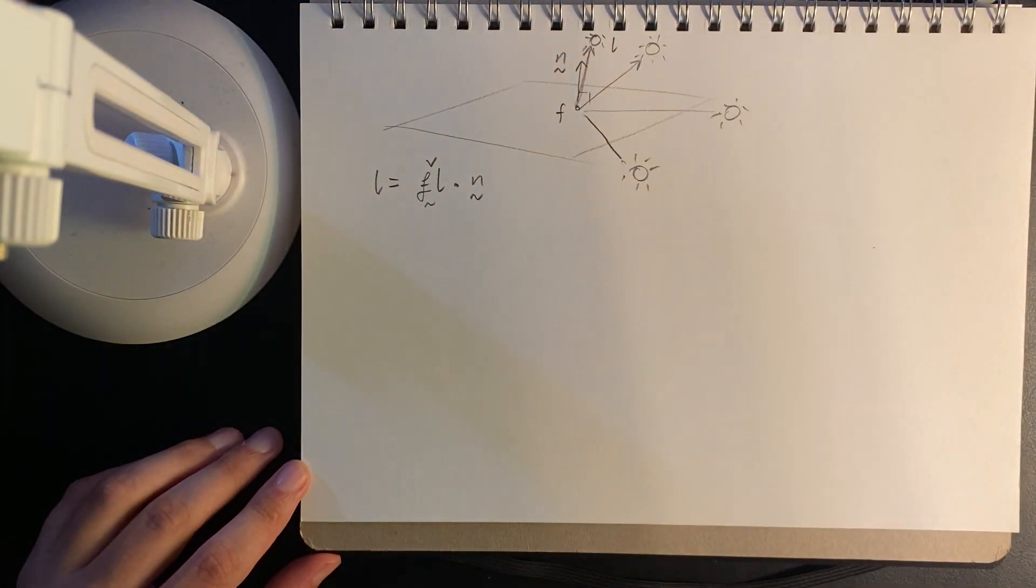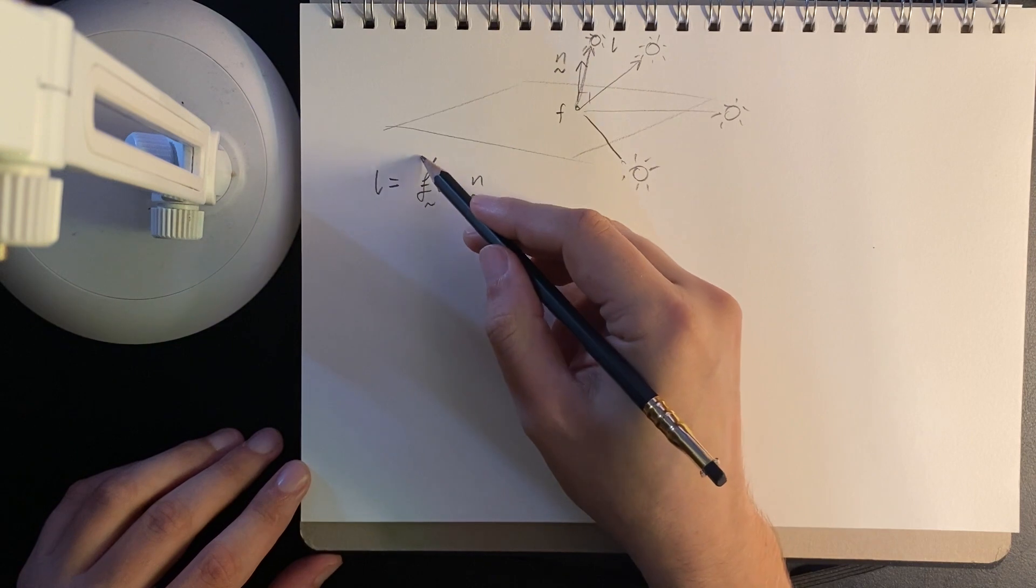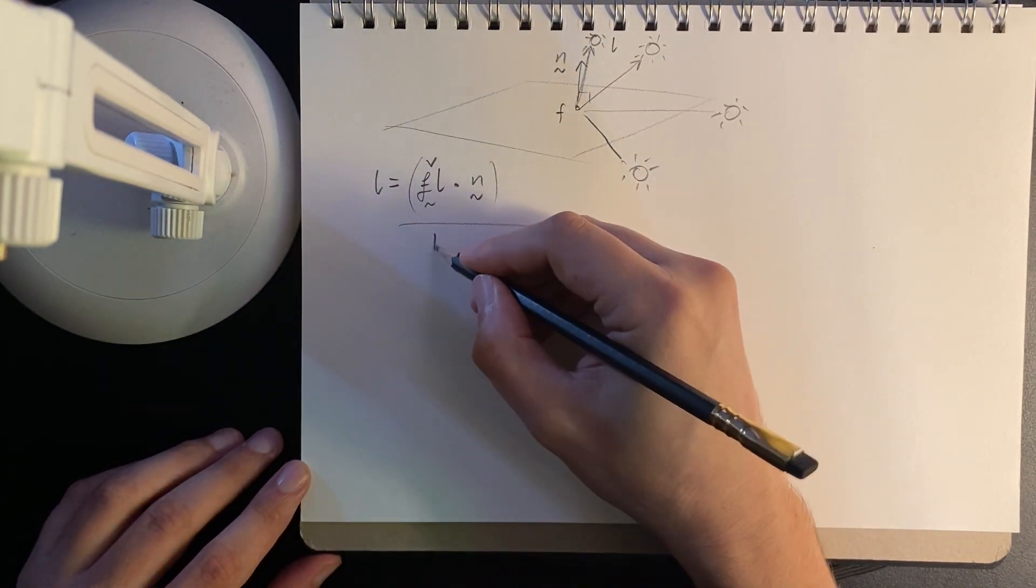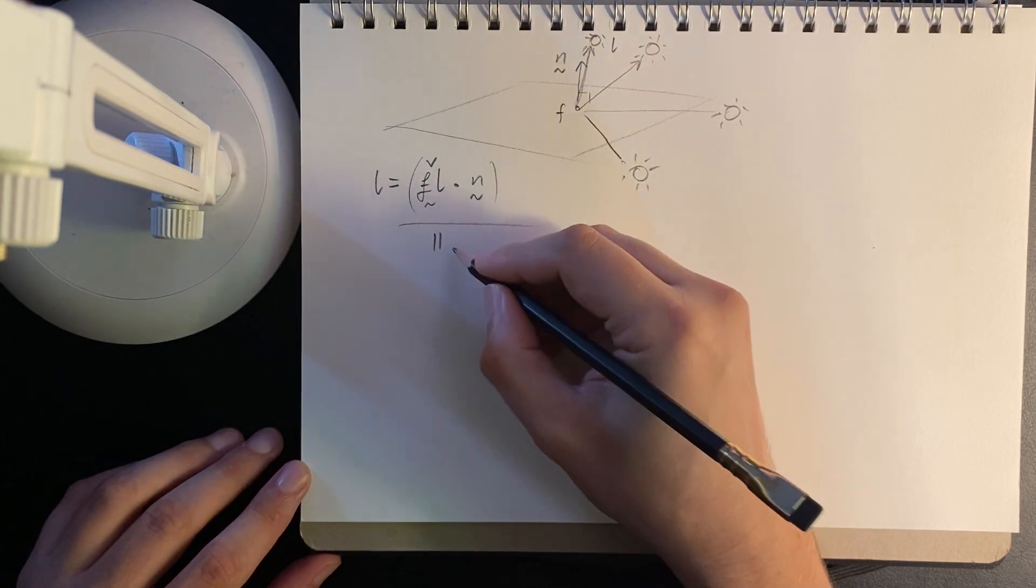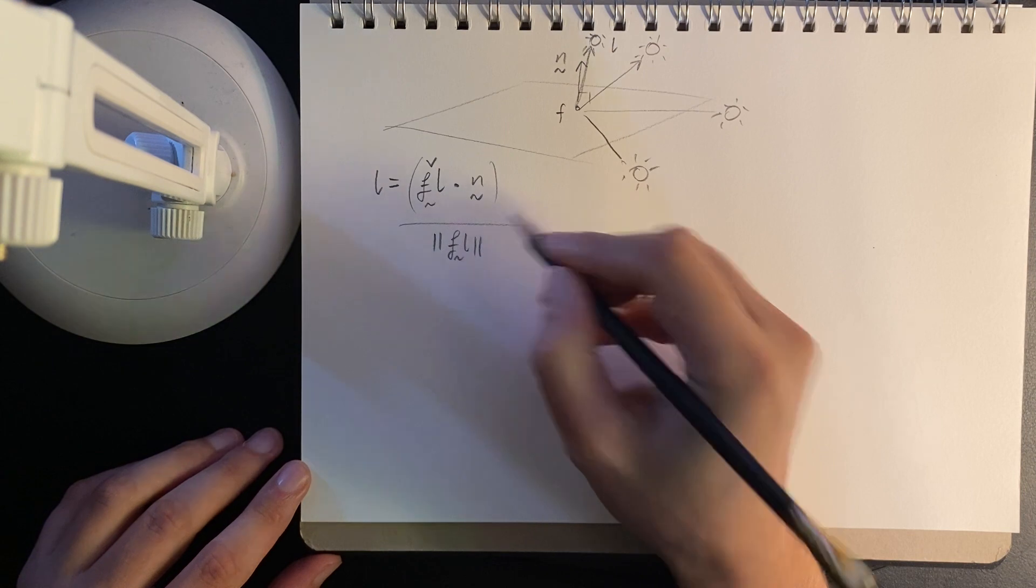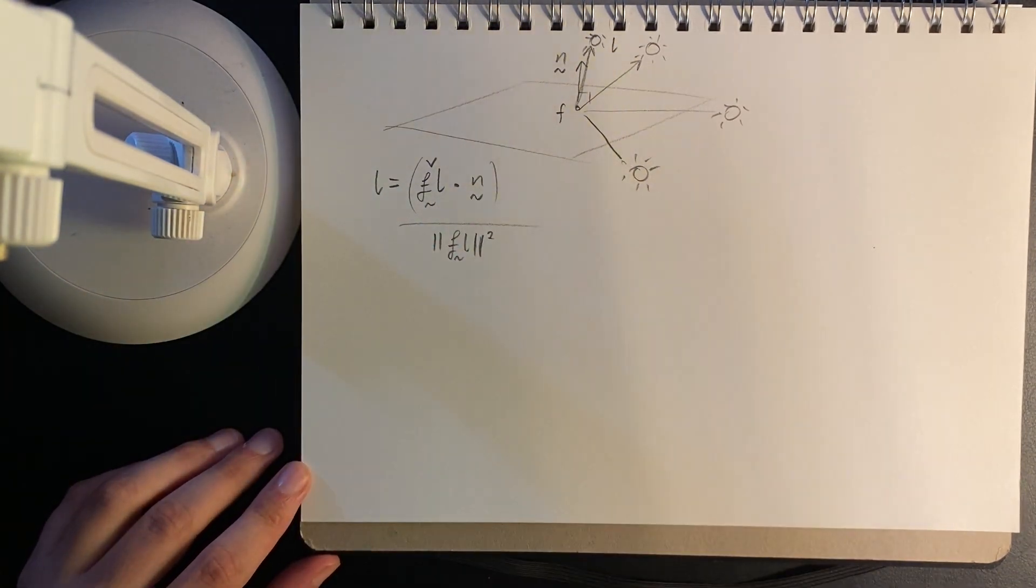The normal typically is always normalized anyway, so don't need to worry about that. And then we would, I guess to make it physically accurate, we would divide by the length of that fl vector squared for quadratic distance falloff. But anyway, that's one example. I've kind of been through that example quite a lot.